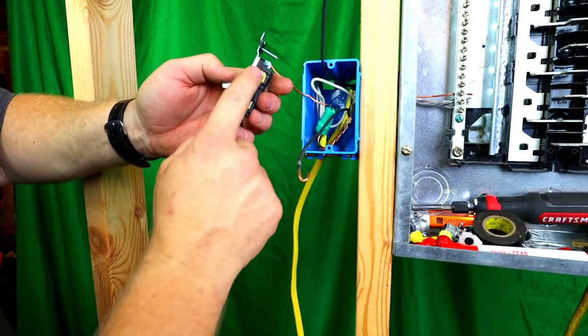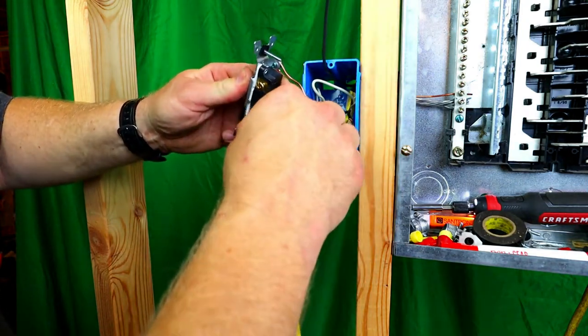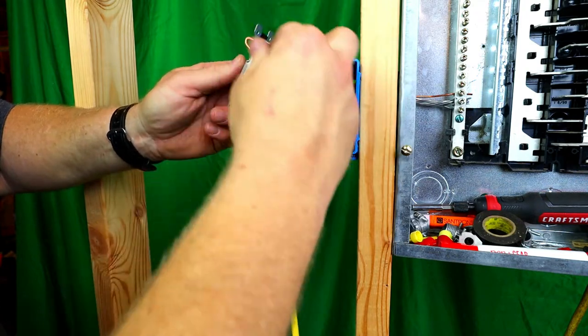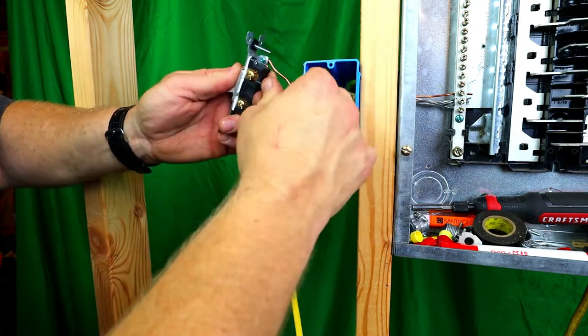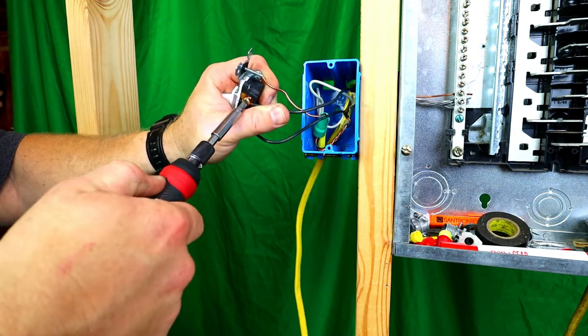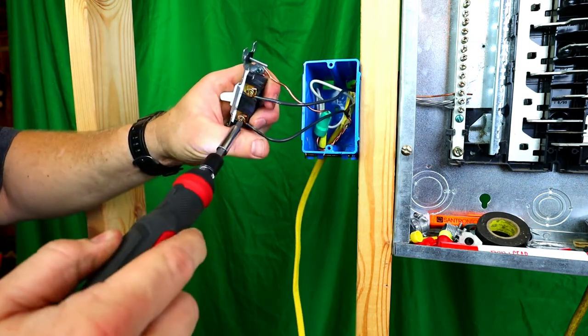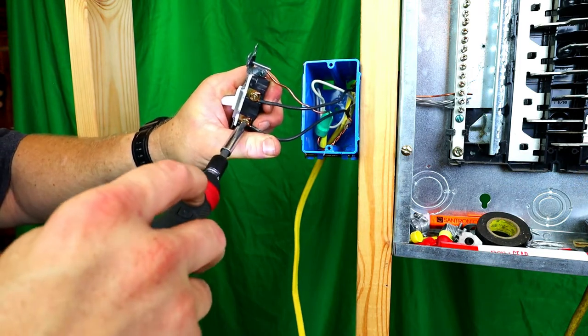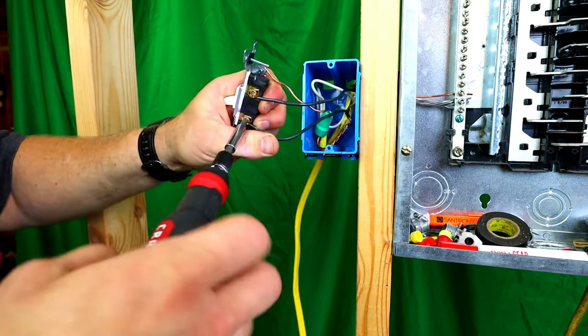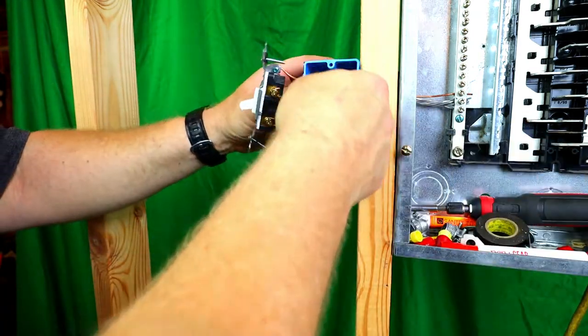Now it doesn't matter. I told you before, it does not matter, but it does to me. So this is the hot coming from your panel. This is the switch leg going up to the light. We're going to tighten these up. You know, the screwdriver's getting a little dead here and that's okay. It's done screwed a lot. We're going to put this into the box.